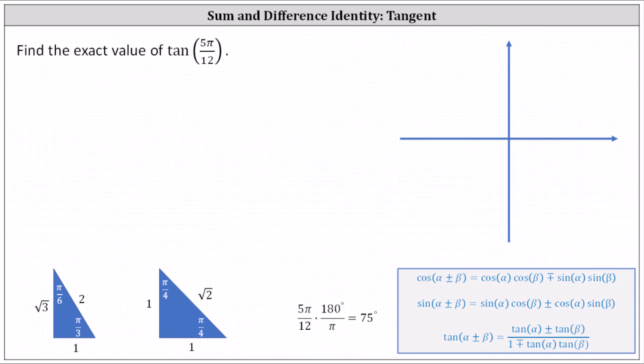We're asked to find the exact value of tangent of five pi divided by 12 radians. Because five pi divided by 12 radians is not a multiple of pi divided by six or pi divided by four radians, or a multiple of 30 or 45 degrees, we'll have to use the sum and difference identity for tangent to determine the exact value.